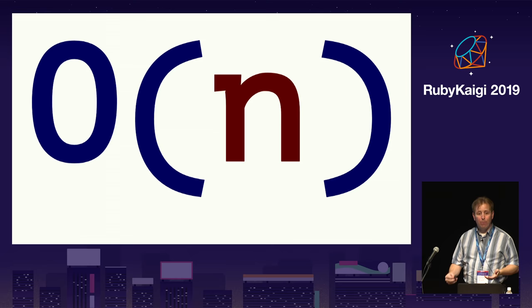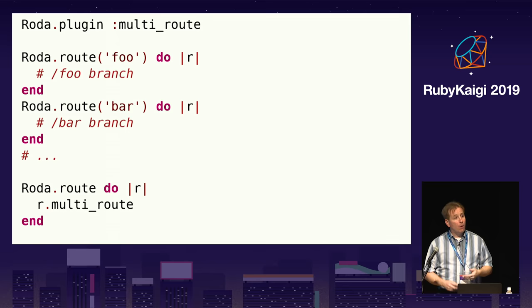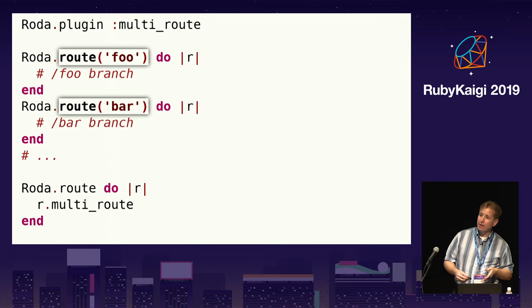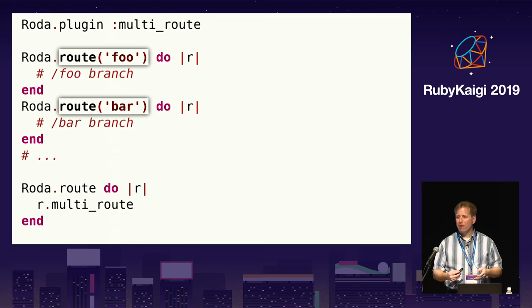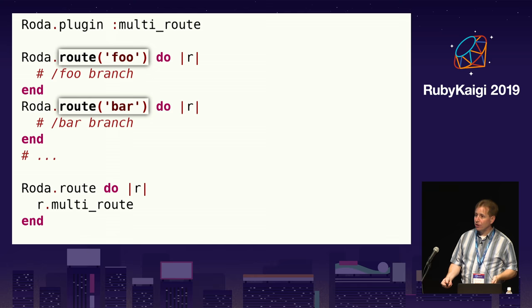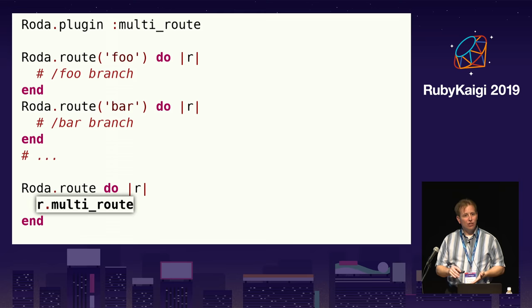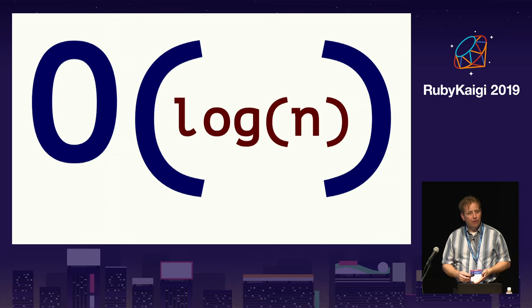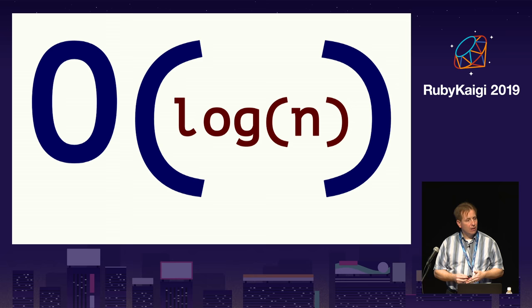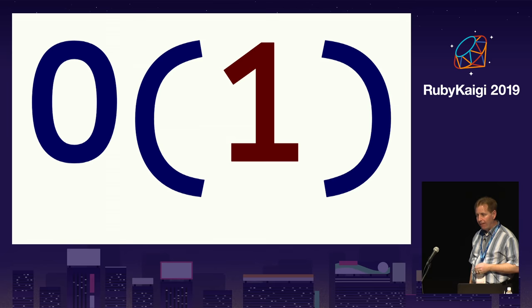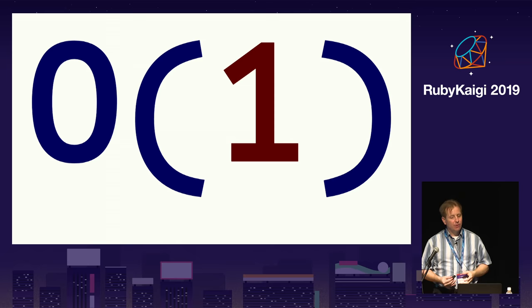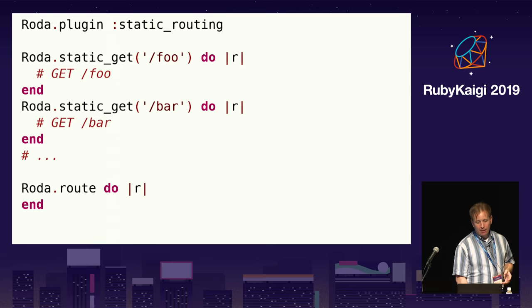With Roda's multi-route plugin, routing trees for different initial segments are outside the main routing tree, usually stored in separate files. Roda takes all these initial segments and builds a regular expression in the main routing tree. The r.multi_route method uses that regular expression to match against all registered initial segments and dispatches to the appropriate routing block, allowing for roughly O(log N) performance for routing for the initial route segments. The multi-route plugin also supports namespaces, which allows for O(log N) routing performance at all levels of the routing tree. But what if we could make routing performance be O(1), so that routing had roughly the same performance regardless of the number of routes? Roda supports that using the static routing plugin, which allows O(1) routing for statically defined routes — the fastest way to route requests.